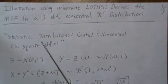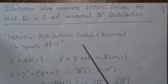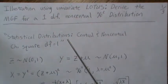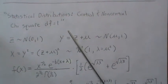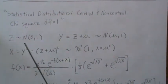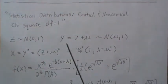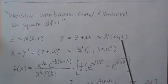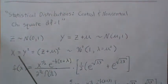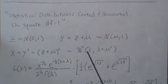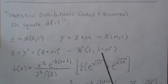And I have a video out called Statistical Distribution Central and Non-Central Chi-Square Degrees of Freedom Equal 1. And in there we derive the density for the one degree of freedom chi-square distribution. So here if we let Z be standard normal and Y be Z plus mu, then Y is distributed normal with mean mu and variance 1. If we let X be Y squared, which is Z plus mu squared, that's chi-squared with one degree of freedom. And the lambda, or the non-centrality parameter, is mu squared.